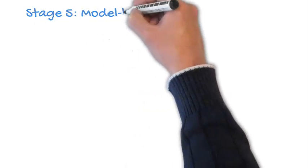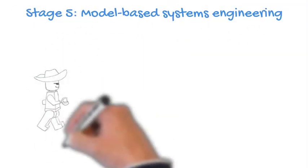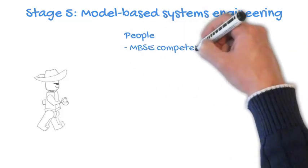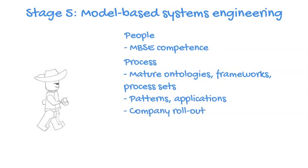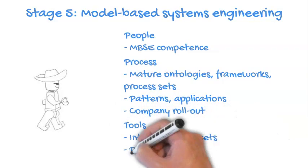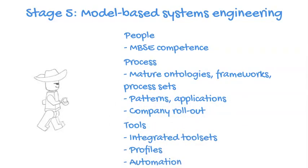Stage 5 is our fully mature model-based systems engineering stage. People have model-based systems engineering competence. We're starting to see mature ontologies, mature frameworks, and mature process sets. We're applying patterns and sophisticated applications, with a rollout across the entire organisation. We're seeing integrated tool sets where simulation tools, modelling tools, and management tools merge seamlessly, with profiles enforcing our overall approach and automation within the tools.